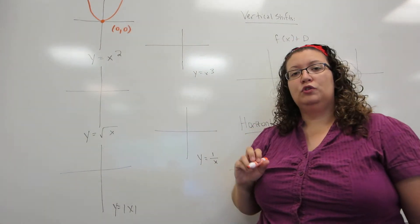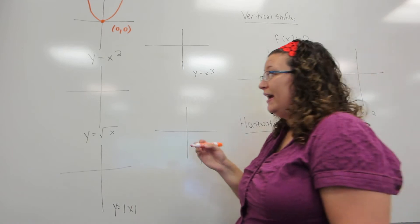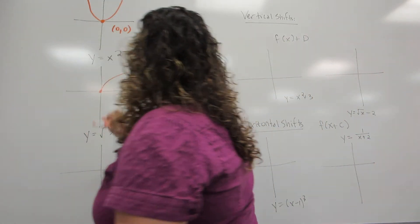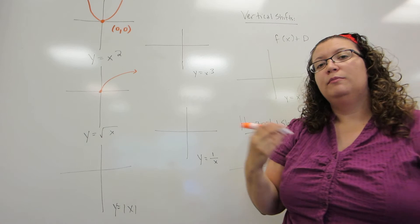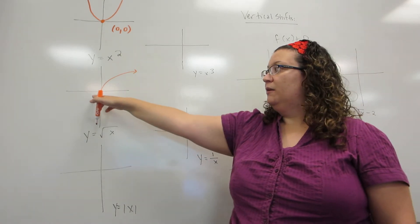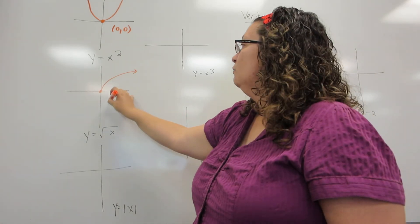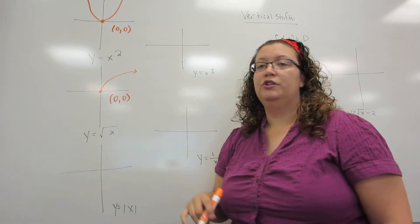Y equals the square root of x is actually half of a parabola on its side. And once again, the most important point is the point that came from the vertex of the parabola, which again is at the origin originally.